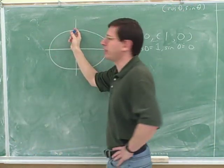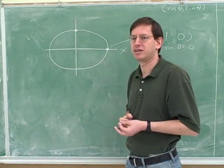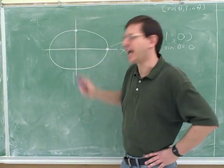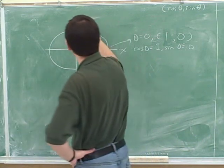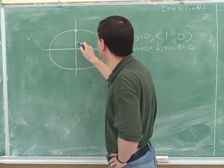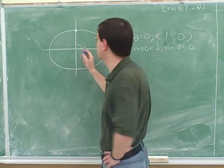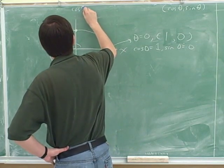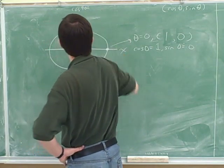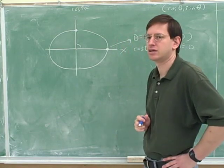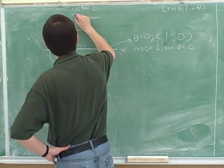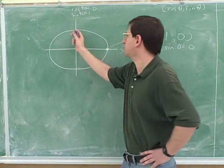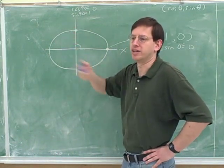What angle does this point represent? The coordinates are (0, 1), and the angle is 90 degrees — this is making an angle of 90 degrees with the x-axis. So the cosine of 90 is zero, and the sine of 90 is one, because this point has an x-coordinate of zero and a y-coordinate of one.